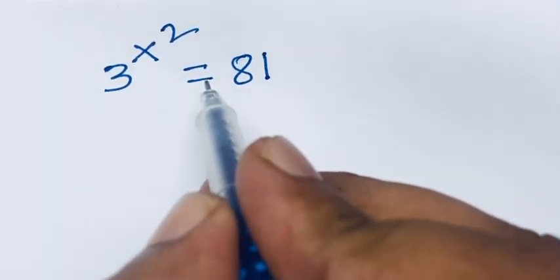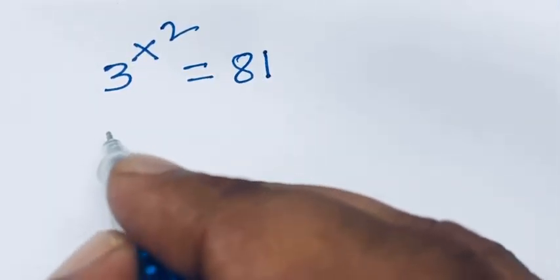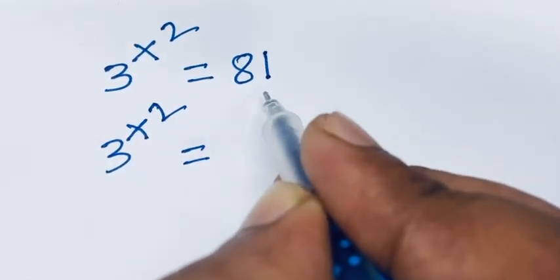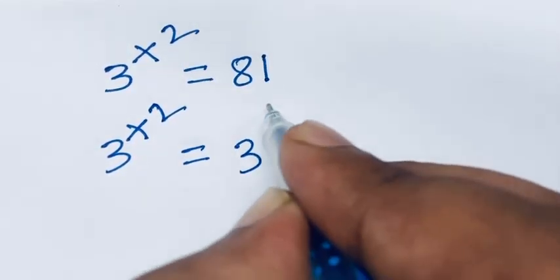How to solve 3x squared equals 81? We can rewrite this equation as 3x squared equals 3 to the power 4.